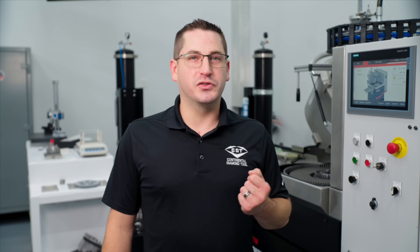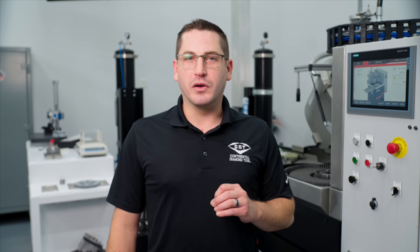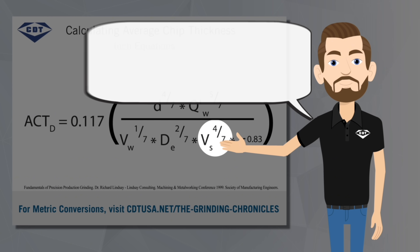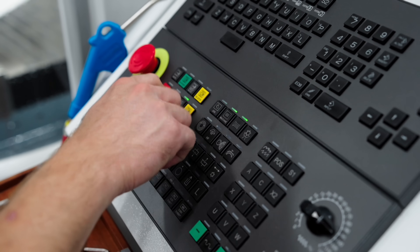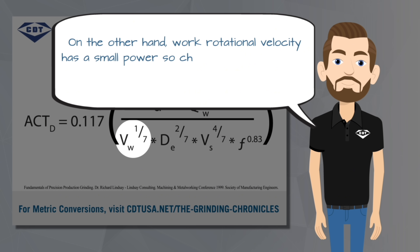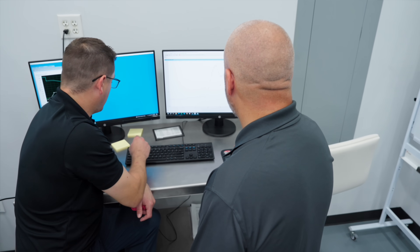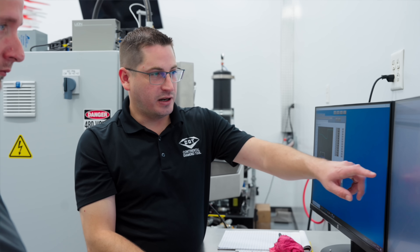Here's the really useful part. Even if you're not running these numbers constantly, understanding this equation immediately tells you which machine parameters will give you the best results. Look closely at the exponents. Notice wheel speed, V sub S, is raised to a high power in the denominator, so it has the potential to make a significant impact — increasing your wheel speed should lower ACT and improve your surface finish. On the other hand, work rotational velocity has a small power, so changing this parameter will not significantly impact your results. Understanding the relationship between these variables takes the guesswork out of your adjustments.